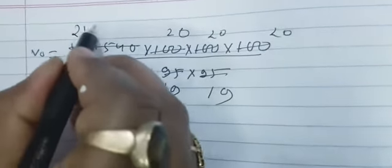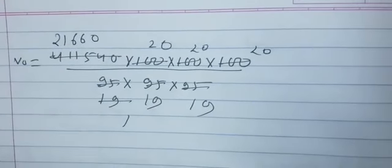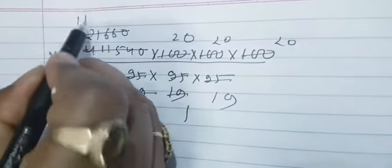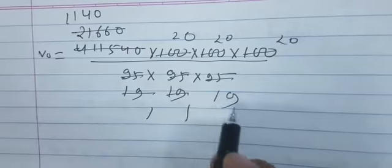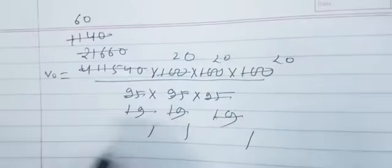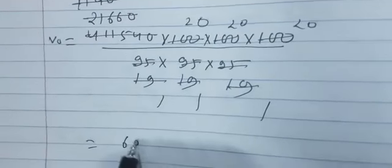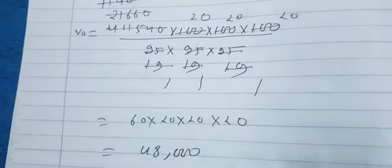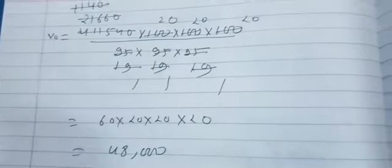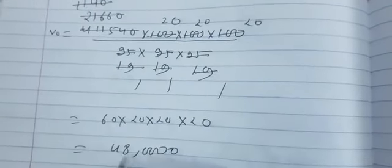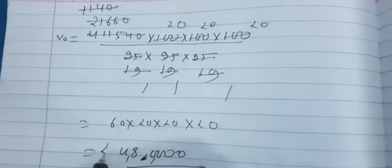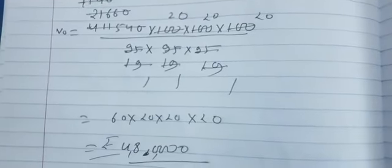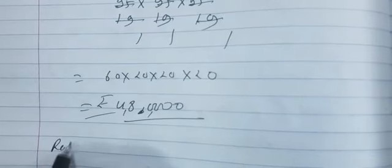Now I am going to reduce it. When you will divide this number by 19, 19, 19, and it will be divided by 2,1,6,60, please do all the calculation part on your own. After cutting, 60 into 20 into 20 into 20, and that is 48,000. It is 4,80,000.